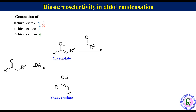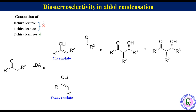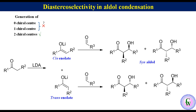Cis enolate reacts with aldehyde to produce preferentially an enantiomeric mixture of aldols having R2 and OH anti to each other, called anti-aldol. Thus which enolate is formed as the major product is the main factor controlling the diastereoselectivity of the aldol condensation.